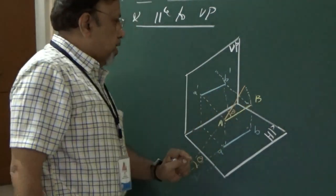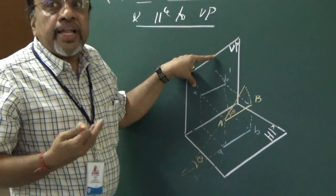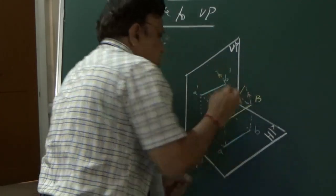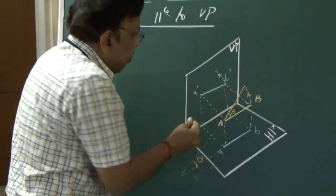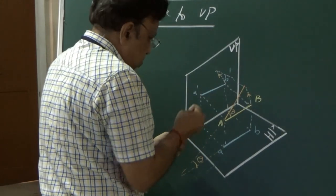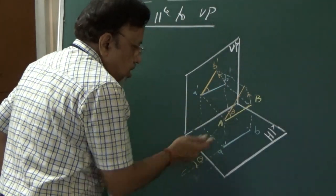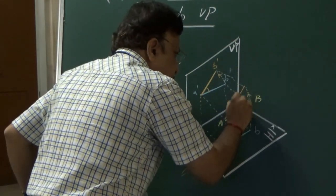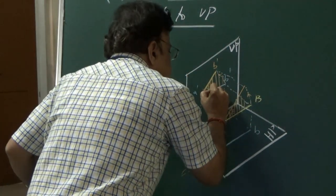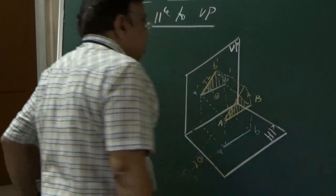Since I have rotated this line with reference to HP, it is still parallel to VP. In the front view, we can see the full true length of the line. I will call this TL — the true length of the line. Looking at the front view, you can see the angle is theta. Since these two planes are parallel to one another, this angle is also theta. And this retains the true length, so I will call it TL.